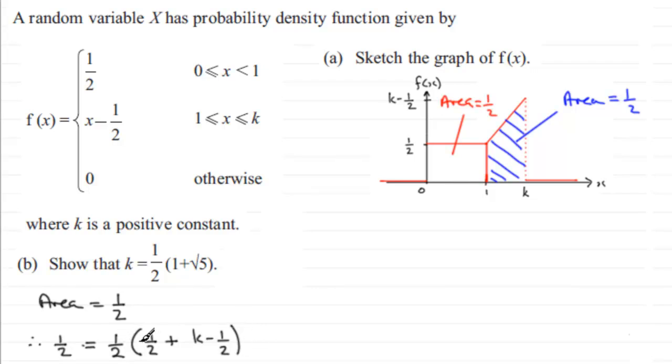So that's half the sum of the parallel sides, and then we need to multiply this by the distance between the two parallel sides, which is this distance here, which is going to be K minus 1. So I put K minus 1.